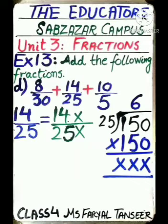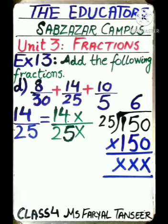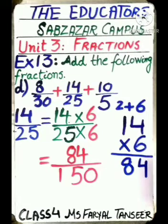The second fraction is 14/25. The denominator is 25. I need to multiply the denominator by a specific digit to reach 150. Dividing 150 by 25 gives 6. So I multiply both 14 and 25 by 6: 14×6=84 and 25×6=150, giving 84/150.